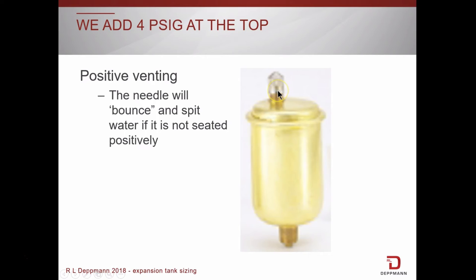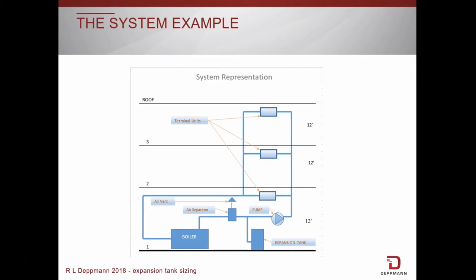If we don't, the pin in the automatic vents shown here will bob up and down with pressure changes and the vent will spit water out. The second reason is to make sure that there is enough pressure to keep the water from flashing into steam if the temperature somehow gets above 212 degrees. 4 pounds is enough pressure for about 215 degrees heating hot water.